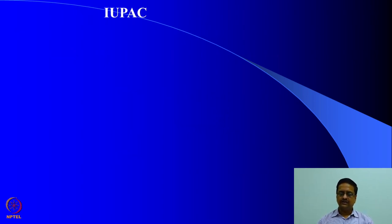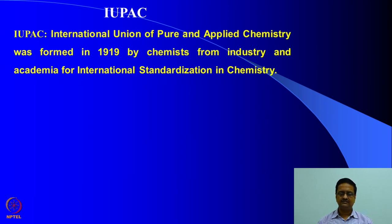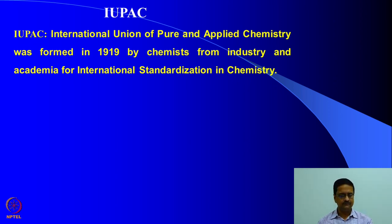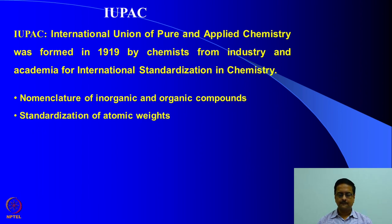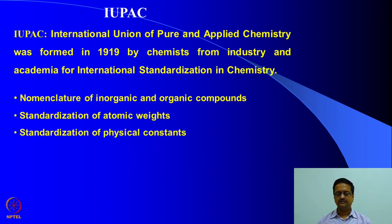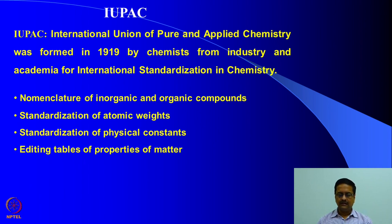As many of you have come across the term IUPAC — which is short for International Union of Pure and Applied Chemistry — it was founded in 1919, about 100 years ago, by chemists from industry and academia for international standardization in chemistry. Initially, the main goals were to give suitable nomenclature of inorganic and organic compounds, standardize atomic weights of various atoms and their isotopes, and standardize physical constants.